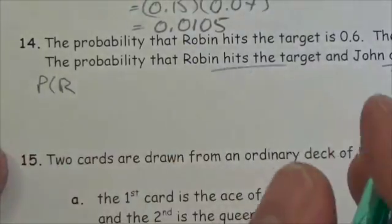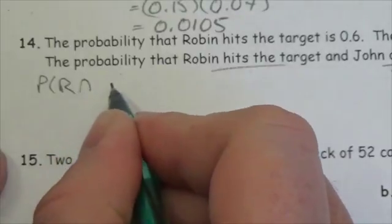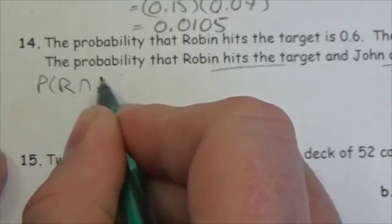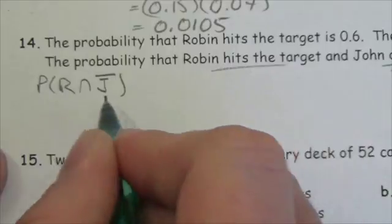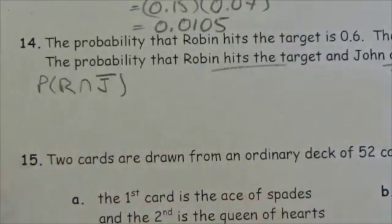We'll use R for Robin hitting the target and John not hitting the target, so I'll use the negation symbol up here to show that he's not hitting the target.